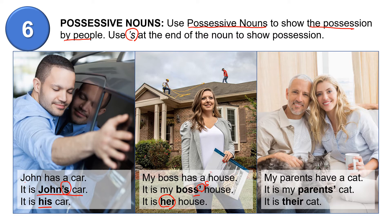My parents have a cat. It is my parents' cat. When it is a plural word ending in S, you put apostrophe only — no extra S. It is my parents' cat. It is their cat.